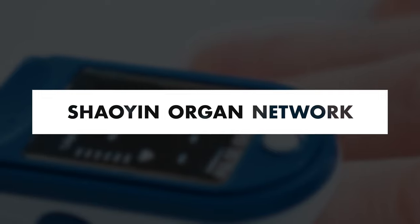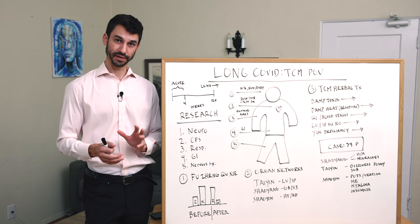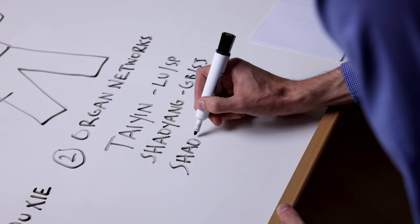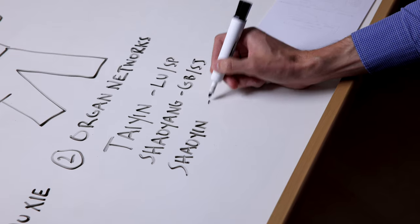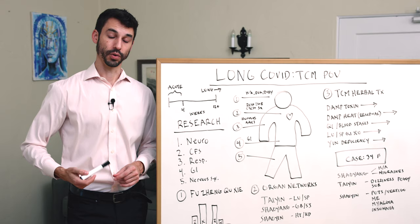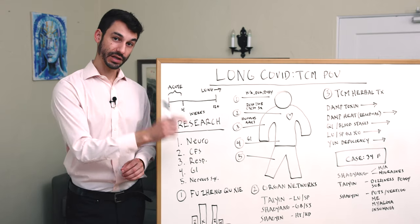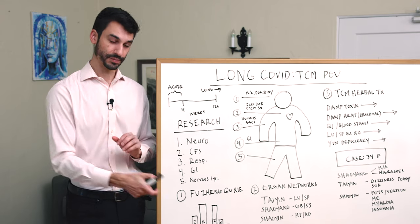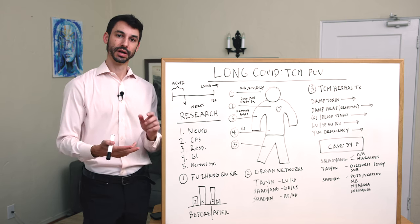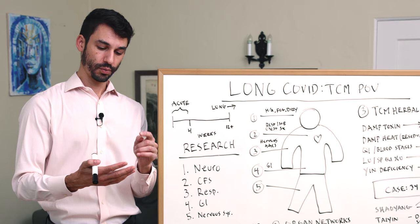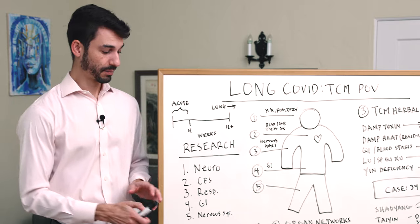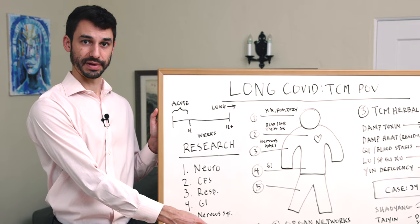And finally the Shaoyin organ network, the heart and the kidney. One way you can conceptually think of these is that this is the axis of the cardiovascular system. Some of the cardiovascular events that happen from Long COVID, like strokes, are in this pattern, and some of the cardiovascular and nervous system symptoms are in this. People who are coming out with crazy anxiety, heart palpitations, very elevated resting heart rate, depression, sleep issues—that is this organ network that's been deregulated.